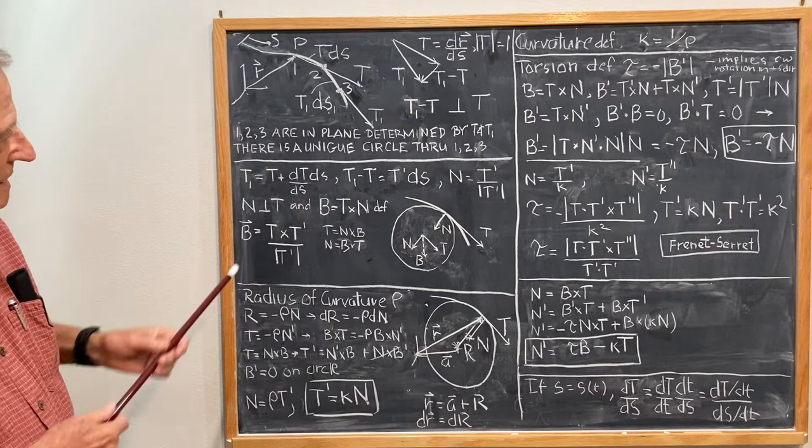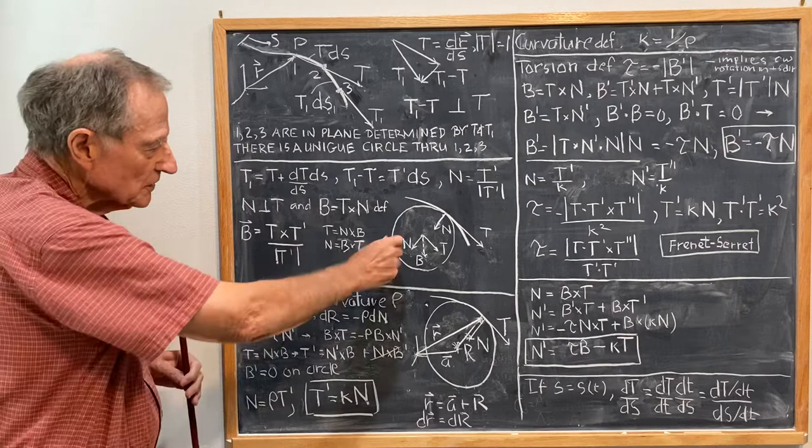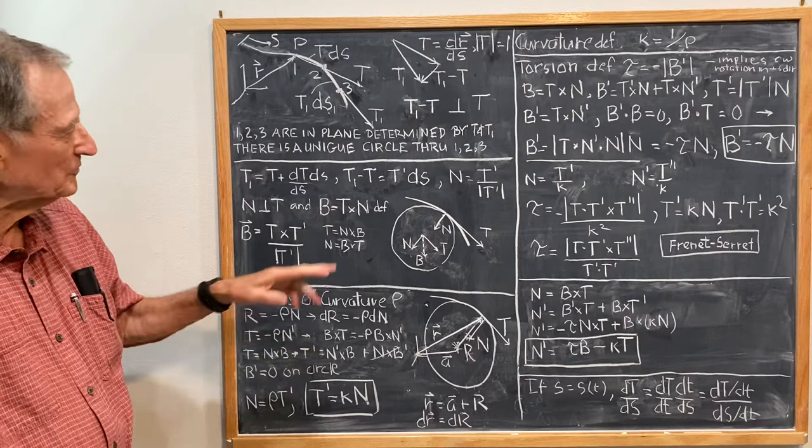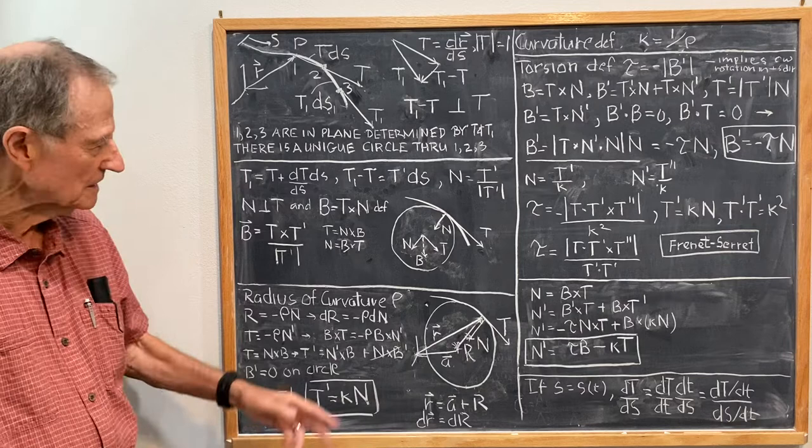We define a third vector, B equal T cross N, purely as a definition. I preferred N cross T because N cross T would put B pointing out, then I had no problem finding different combinations of N, B, and T, but that's the way I originally did it, but then I found all my signs were different from what the conventions were, what the formulas on the web were.